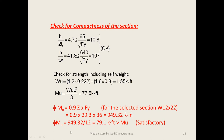Dividing by 12 converts the result to kip-ft, giving phi_b times Mn equal to 79.1 kip-ft, which is greater than Mu of 77.5 kip-ft. The design is therefore satisfactory — the beam is able to support the required moment, and the section is compact. This concludes the video lecture.